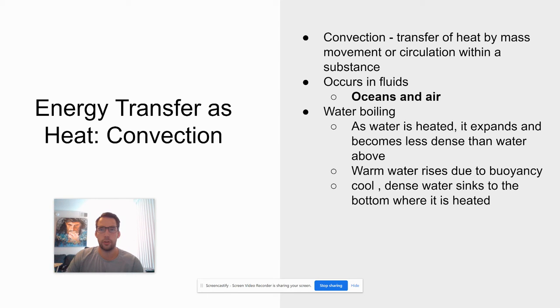First one is convection. Convection is the transfer of heat by mass movement or circulation within a substance. This happens on Earth through the atmosphere, air, and through our oceans.